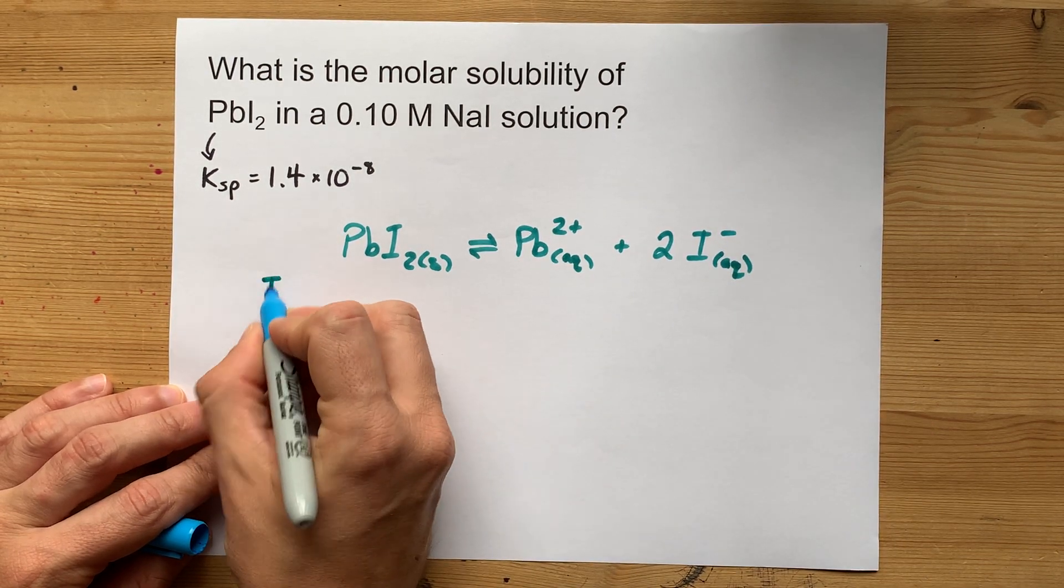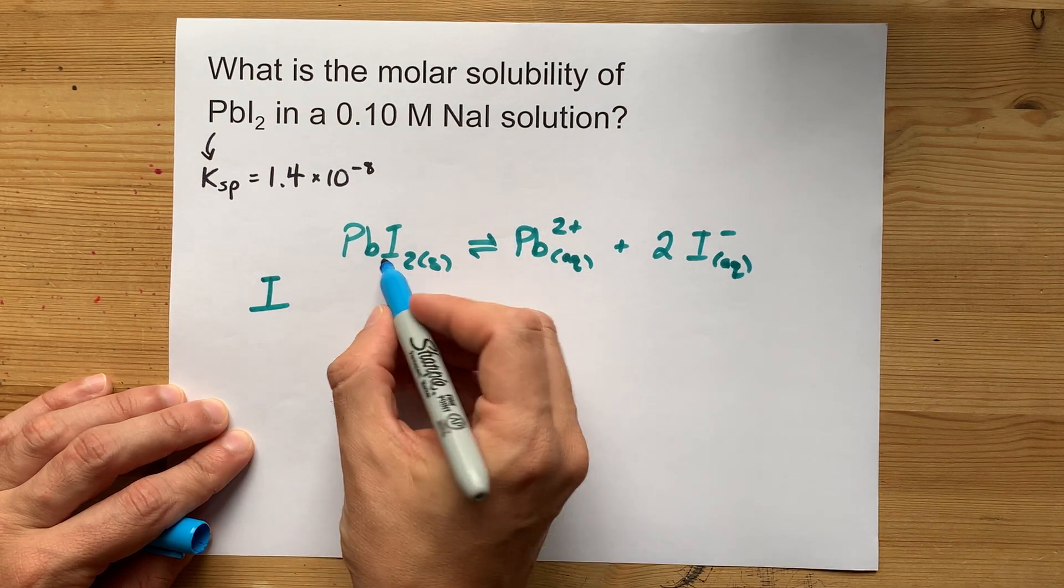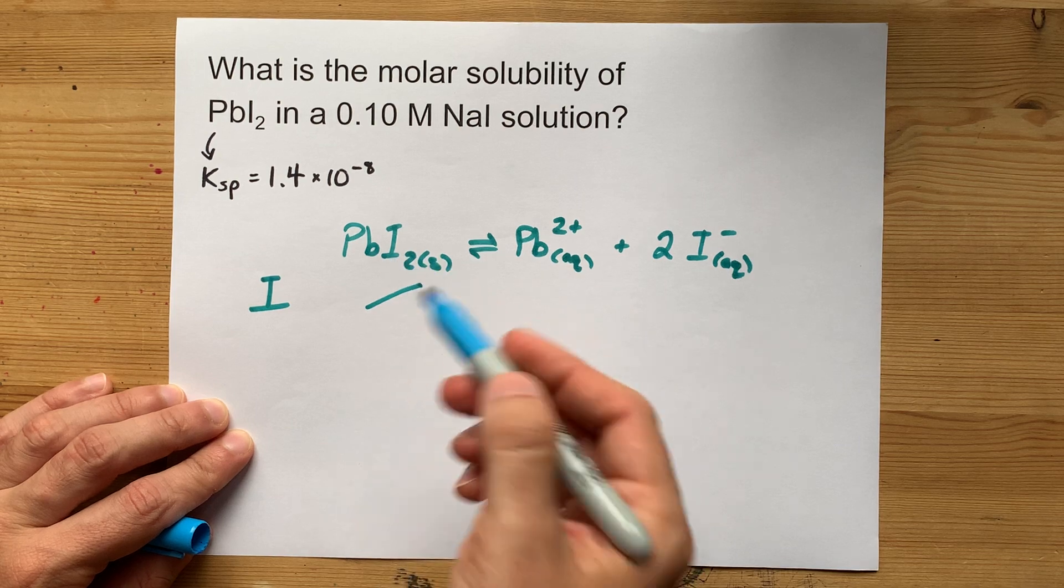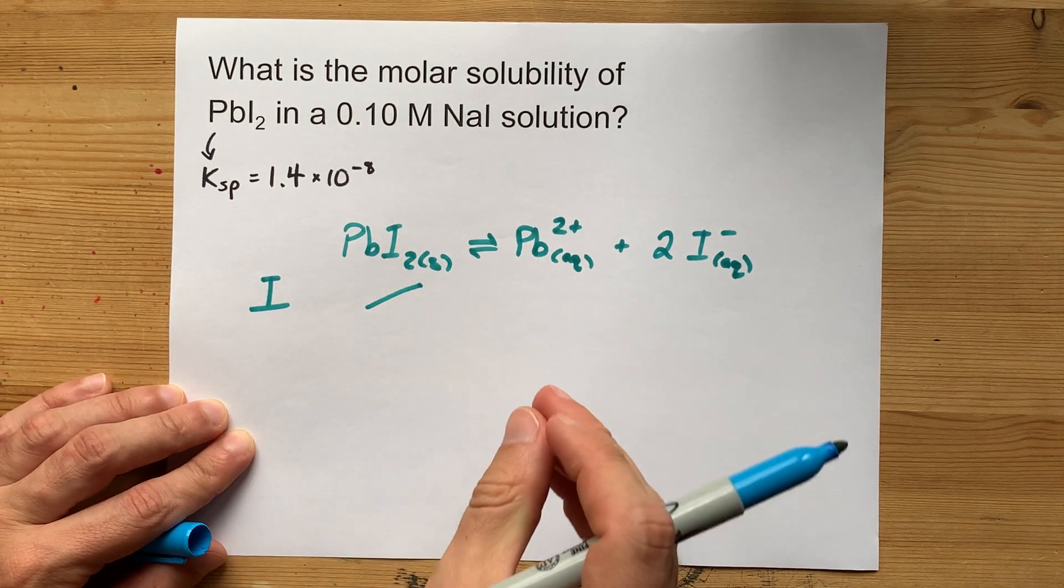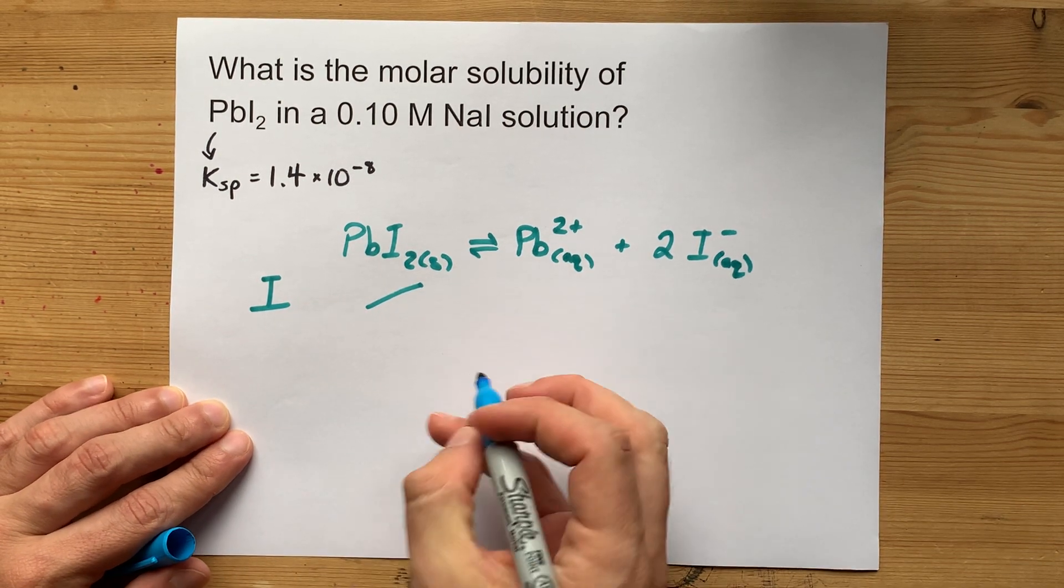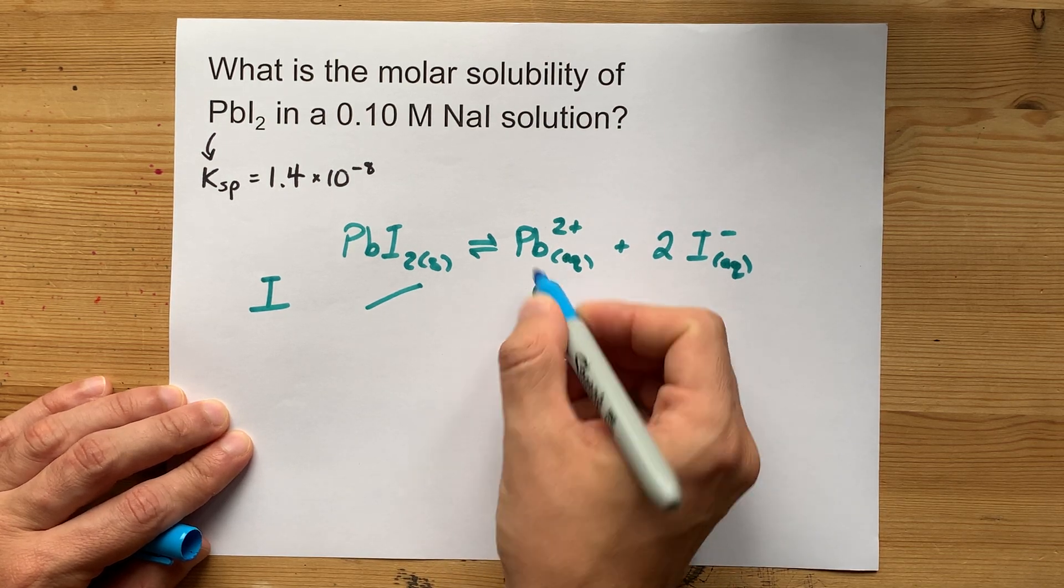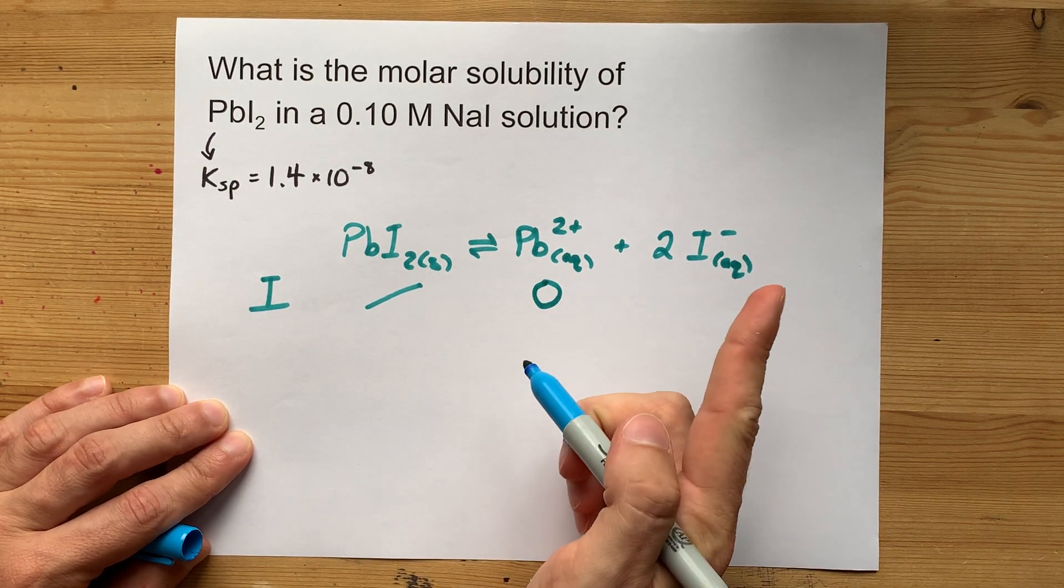The initial concentration of the solid, we don't even have to worry about because solids don't play a role in equilibrium. It only matters that they're there. We're going to say that we start with no lead, but we do start with some iodide.